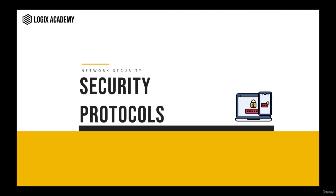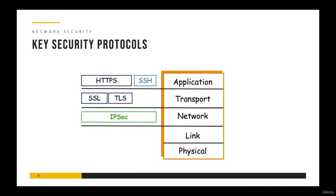In this lecture we are going to discuss some of the key security protocols used in networks. This is an interesting figure because it tells you where each of these protocols reside in the protocol stack. For example, we have HTTPS and SSH which reside at the application layer, SSL and TLS which reside at the transport layer, and IPSec which resides at the network layer. From a conceptual perspective it is very important to be aware of where each of these security solutions reside in the protocol stack.